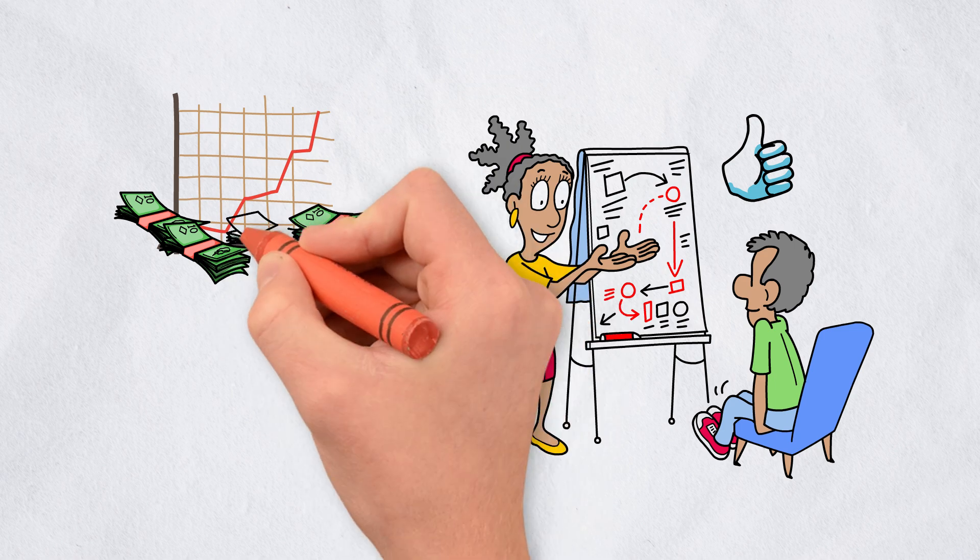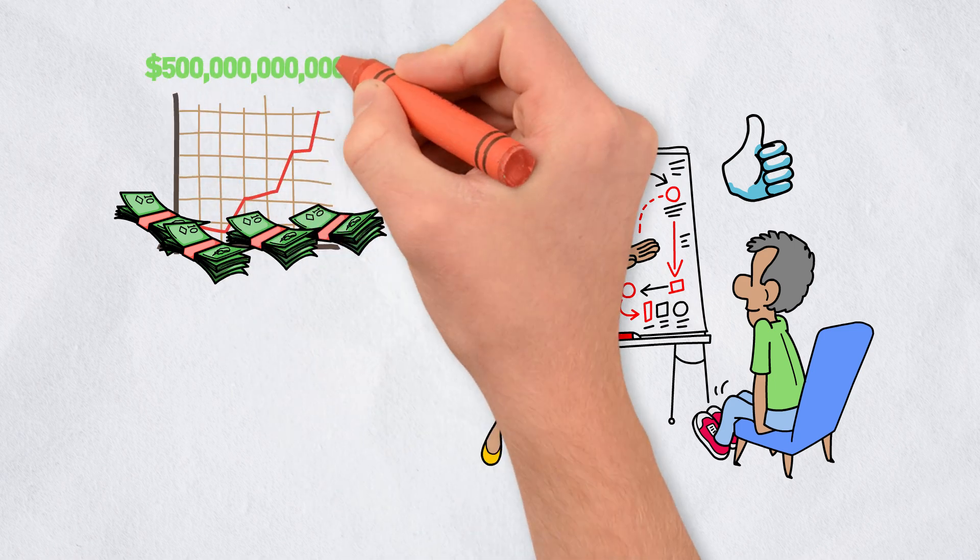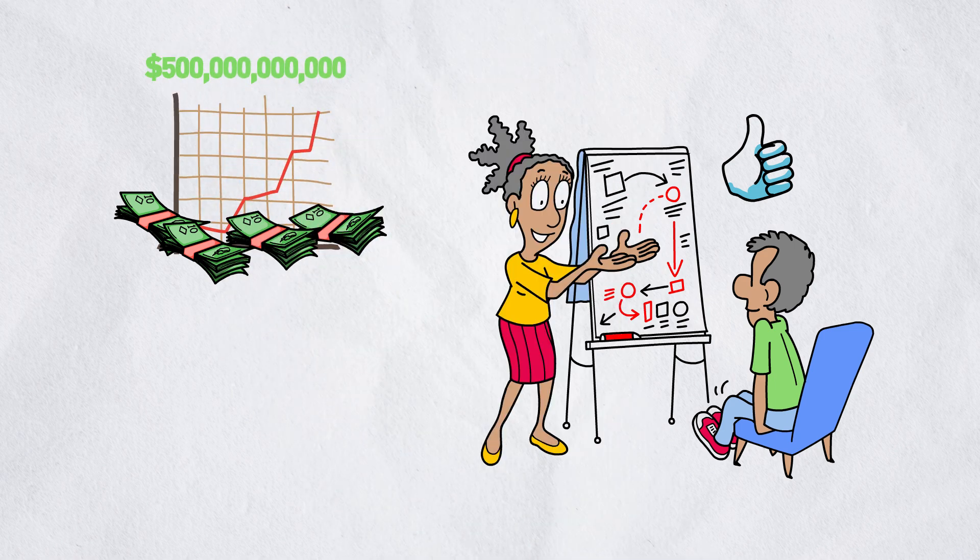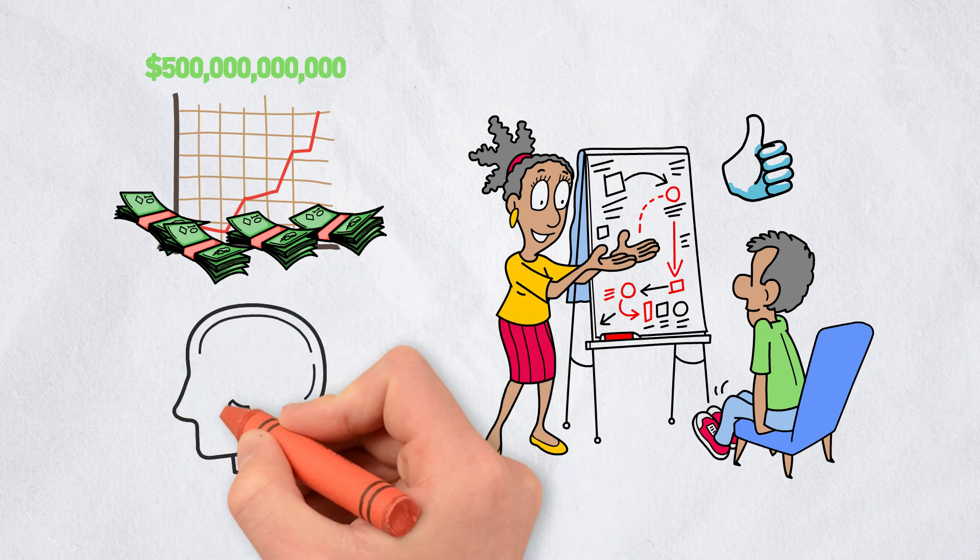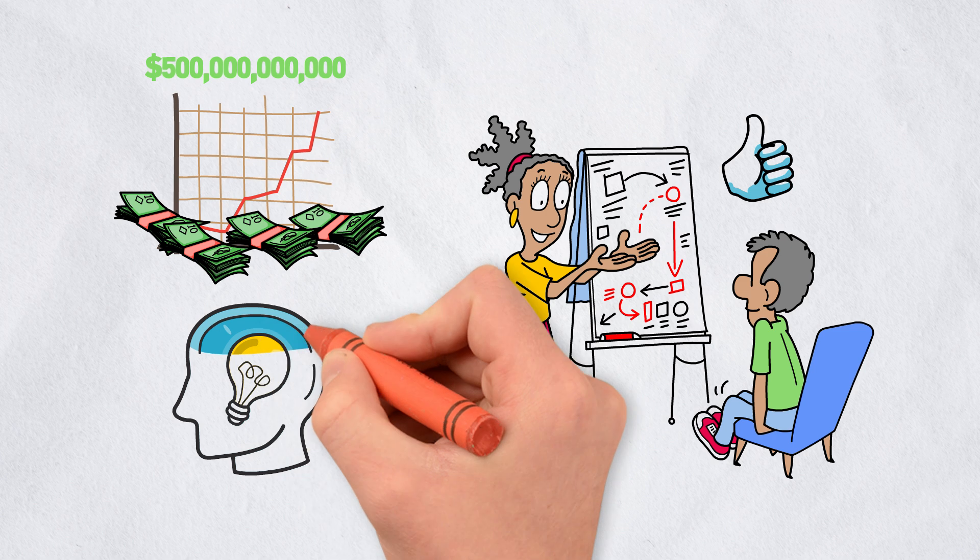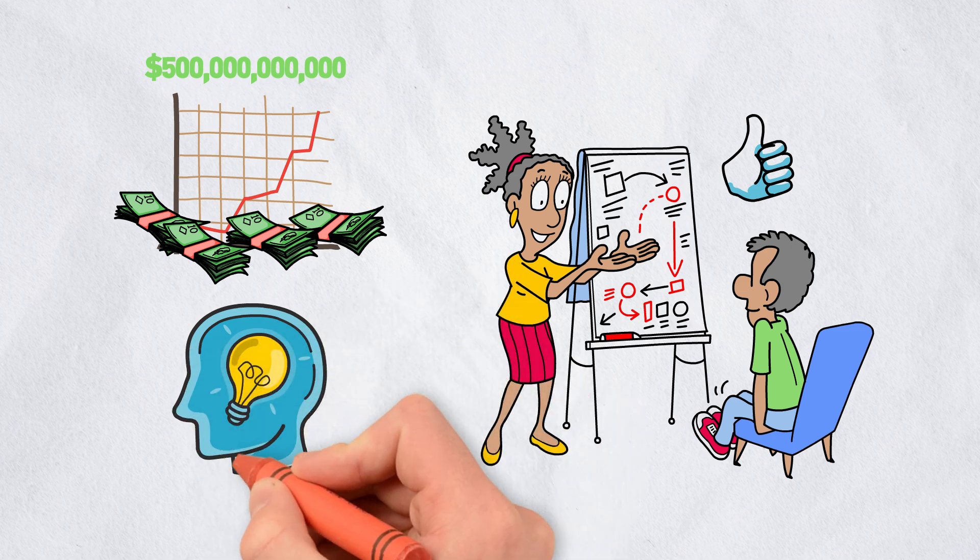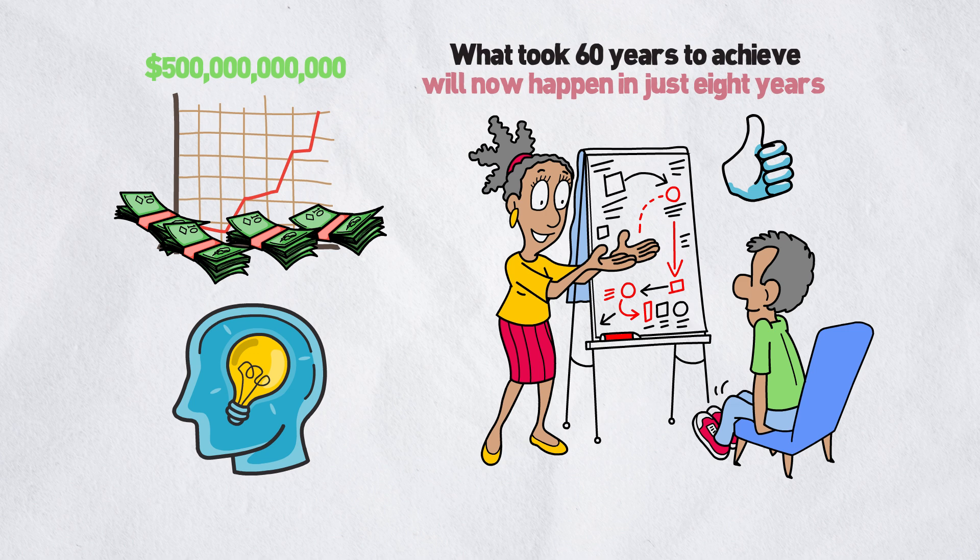The global semiconductor market is currently around half a trillion dollars and is expected to double. With AI's rapid market integration, it is not a stretch to say it will exceed a trillion dollars in the next 8 to 10 years. What took 60 years to achieve will now happen in just 8 years.